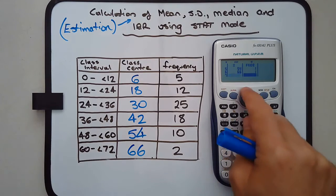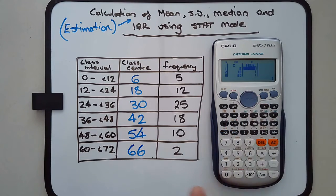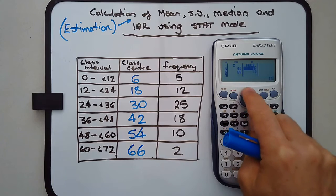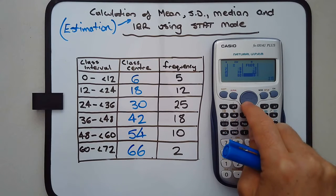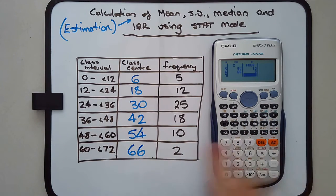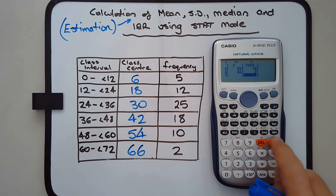Moving along to fill out the frequency column: 5, 12, 25, 18, 10, and 2. We should have six rows there. If you need to review the data, you can scroll around and check to make sure it's as it should be. Press the AC key.